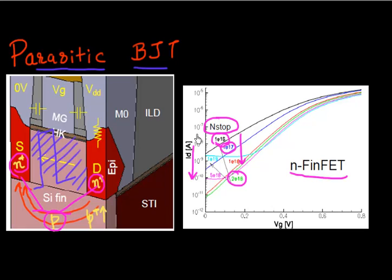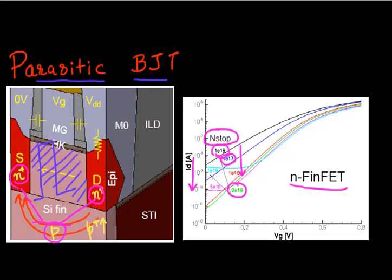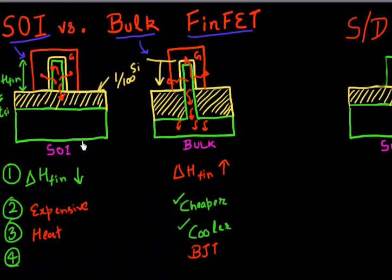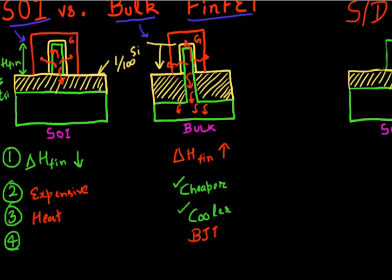But it adds to the process complexity. So you need to dope your fin region below your channel, and you really don't want to add that extra process complexity. So this is, I would say, an argument which is against my bulk substrate. As compared to a SOI substrate, I essentially have no life underneath my fin. So underneath my fin is just my oxide, so it has no issue of parasitic BJT.